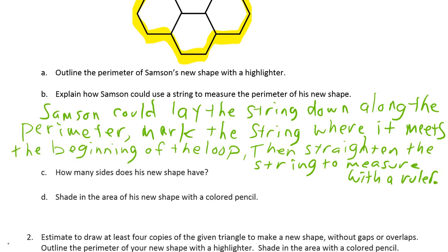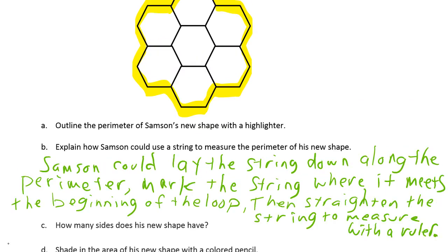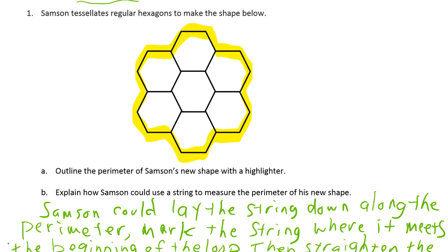All right. How many sides does his new shape have? So this is his unit. We're going to count all the sides. And one of the things that might make it easier for you to count is to recognize that each hexagon has three sides exposed to the perimeter. So that's three, three, three, three, three, three. Right? So that's six threes, which is 18.